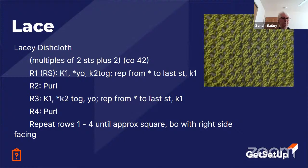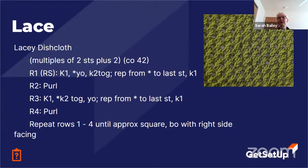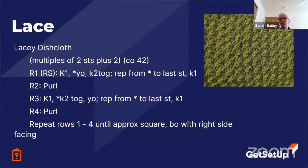Elaine: Are you going to want to do an edge on this if you're using it for a dishcloth? I would usually crochet an edge just to keep it strong. Sarah: That's exactly what I would do too. You could also find a knitting border — picking up edge stitches is easy on the cast on and bind off rows, a little harder on the side edges — but either way is a great idea to keep it strong.